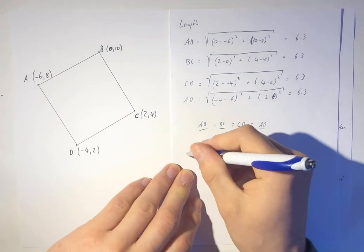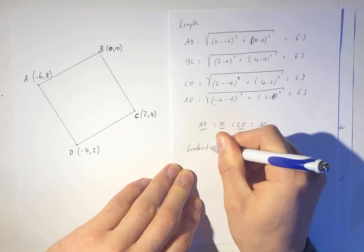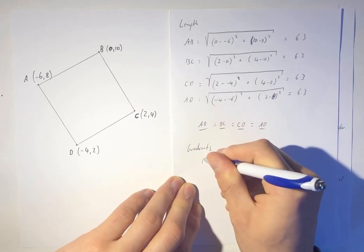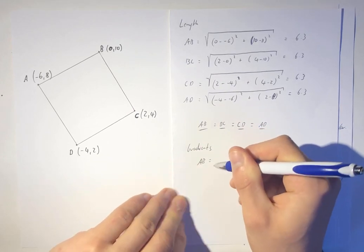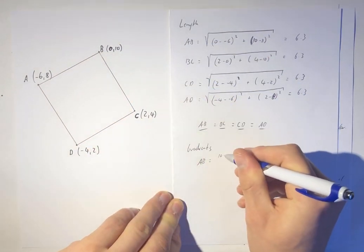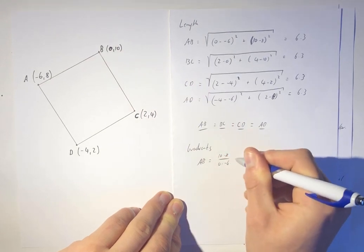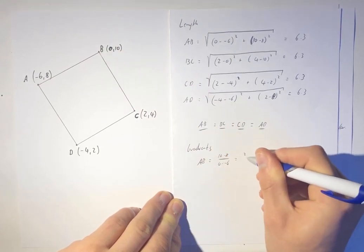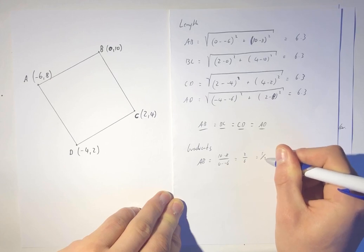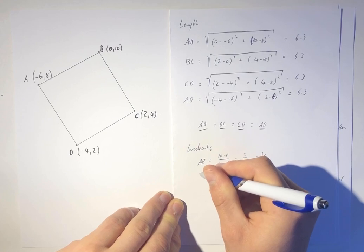Now we just need gradients. Gradients AB. Well it's going to be rise over run, so that's going to be 10 minus 8 over zero take away negative 6, so it's going to be 2 over 6, which is 1/3. Notice how I'm simplifying my fractions right down, 1/3.